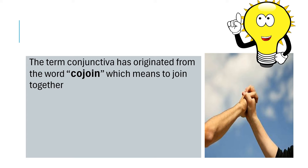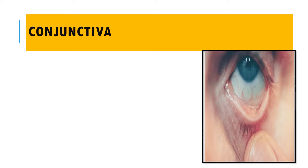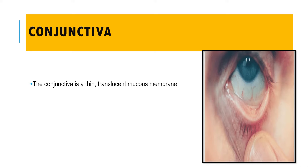So what is conjunctiva? The term conjunctiva has originated from the word 'conjoin', which basically means to join together. Conjunctiva joins your eyeball and the eyelid together, and therefore the term conjunctiva is given. It is basically a thin translucent mucous membrane covering the bulbar conjunctiva or the eyeball and also on the inner side of your eyelid, and therefore it is divided into two types.